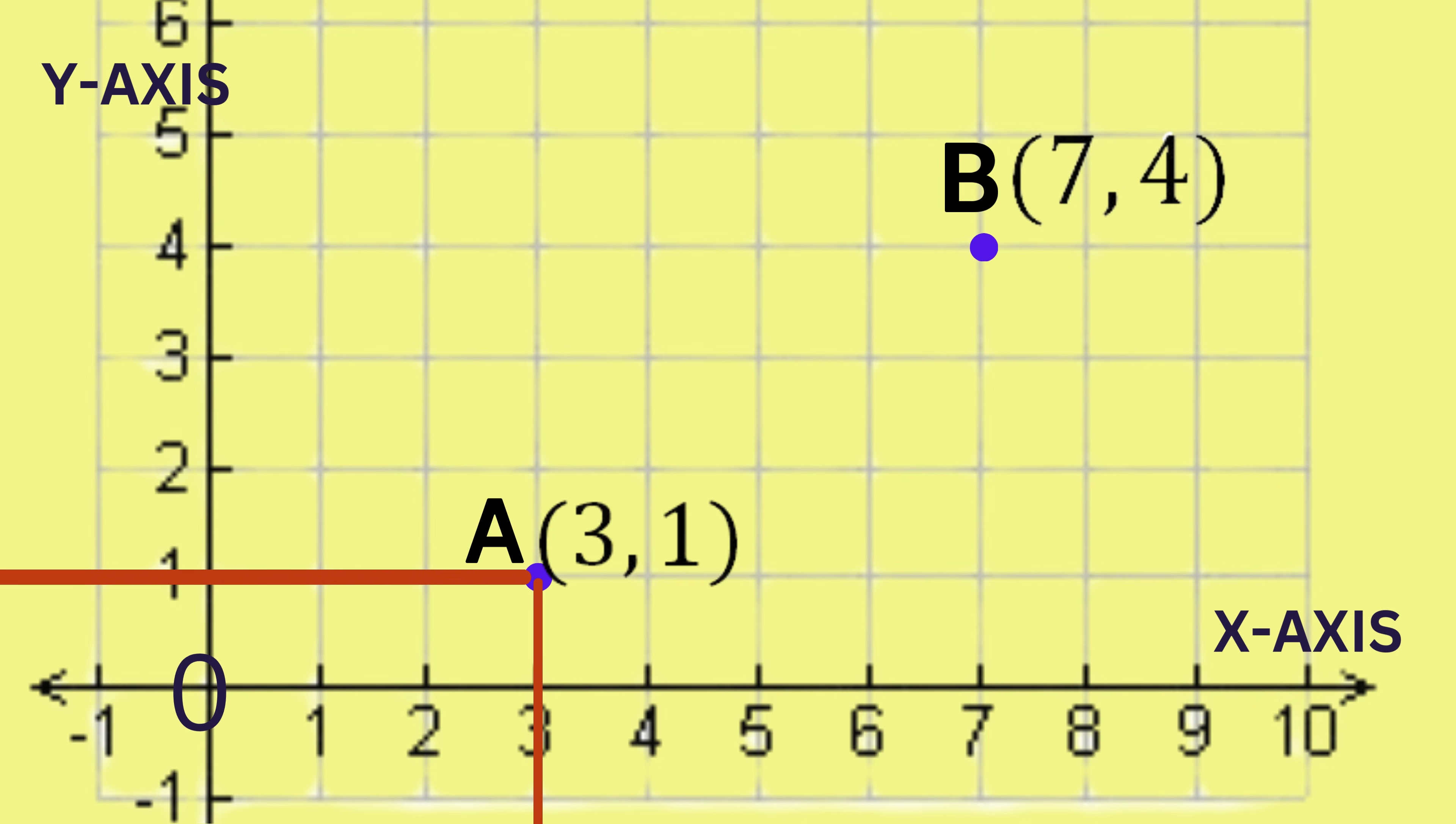Notice that we always put the x-coordinate first, a comma, and then the y-coordinate, enclosed in brackets. Note that where the x and y-coordinates meet is called the origin and has coordinates (0, 0).